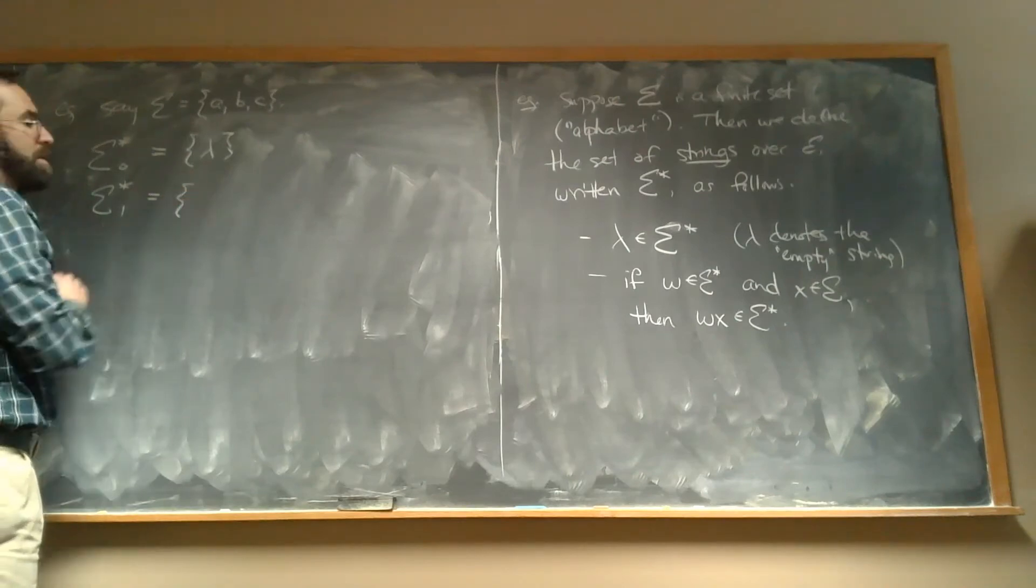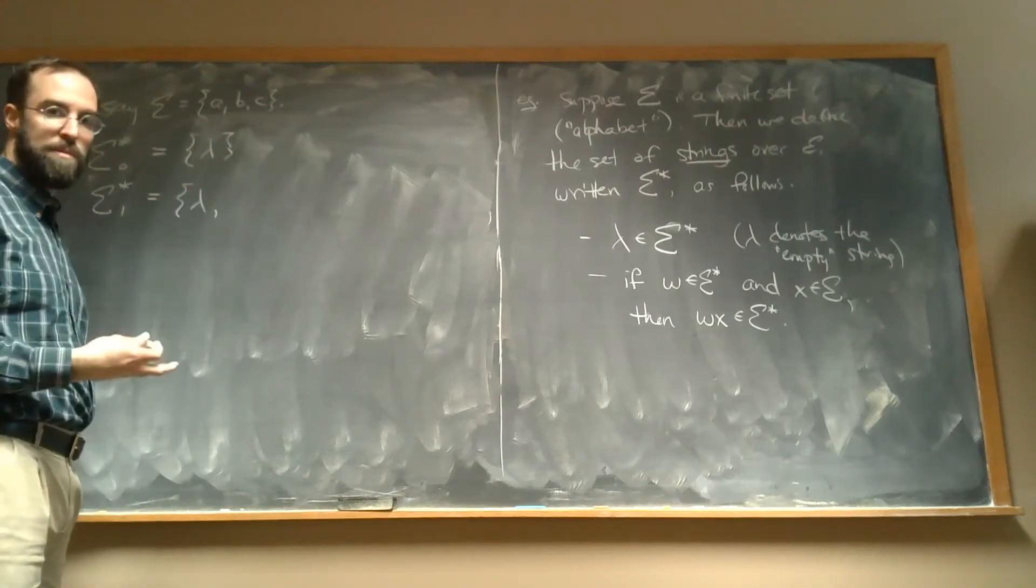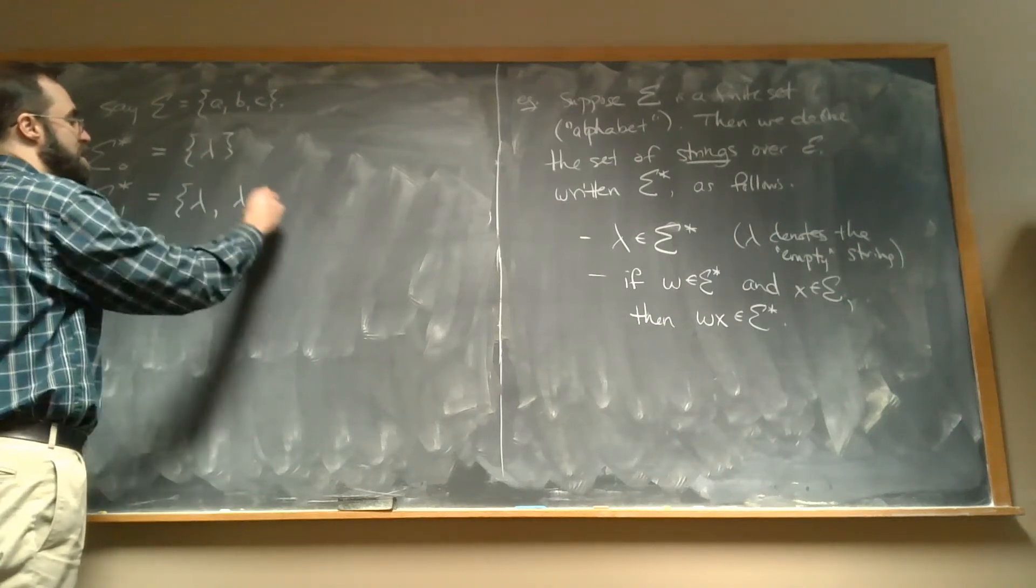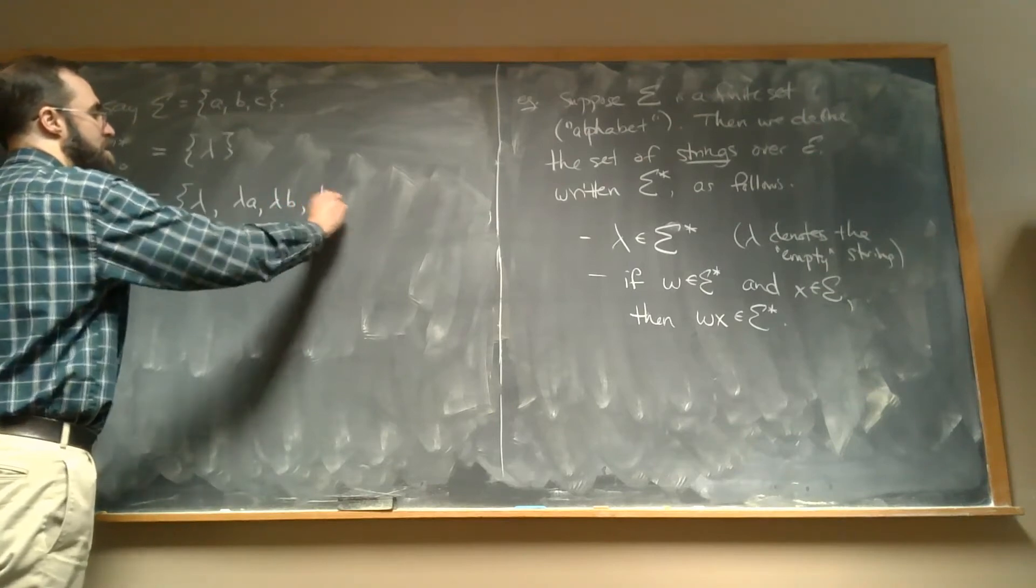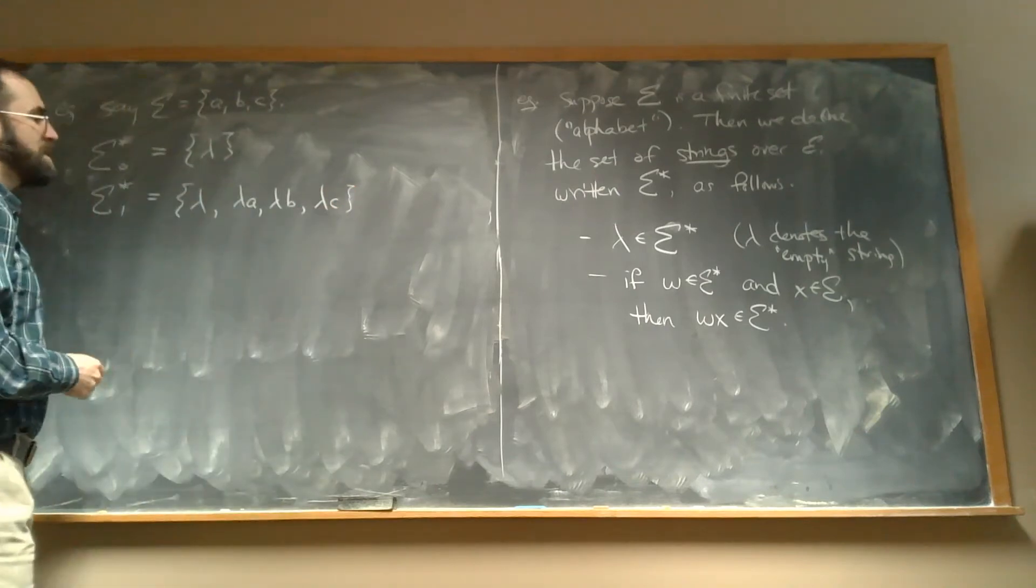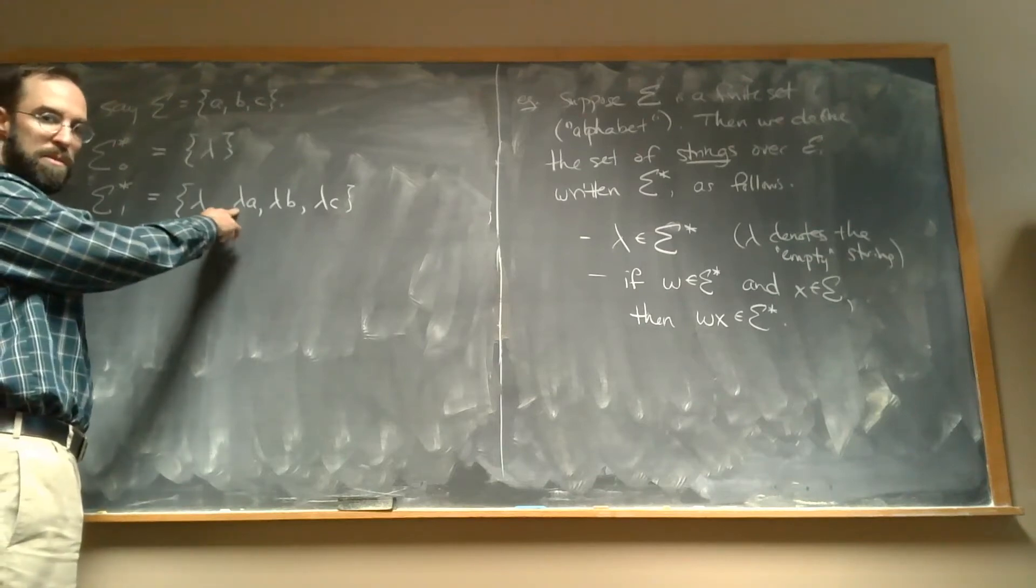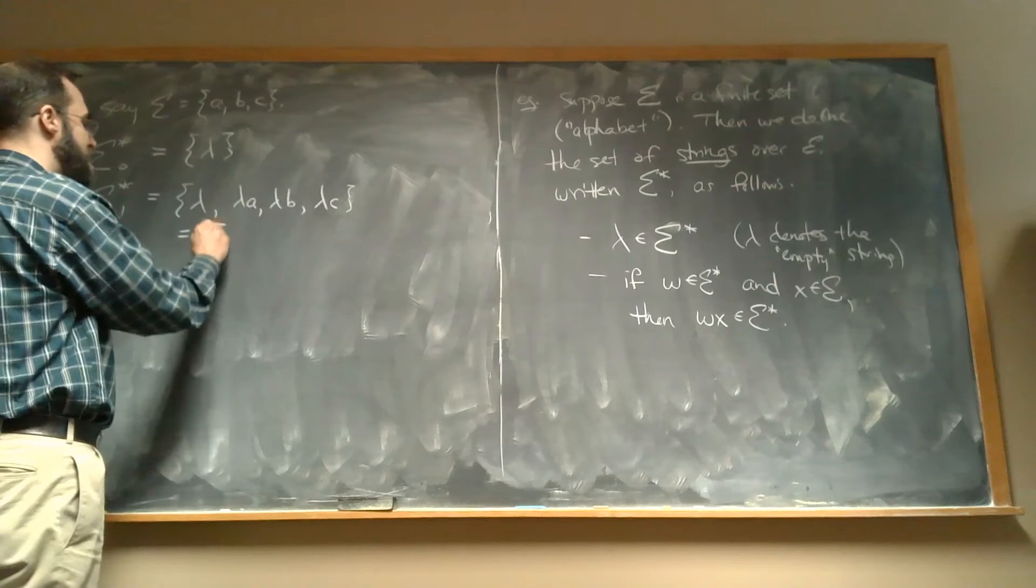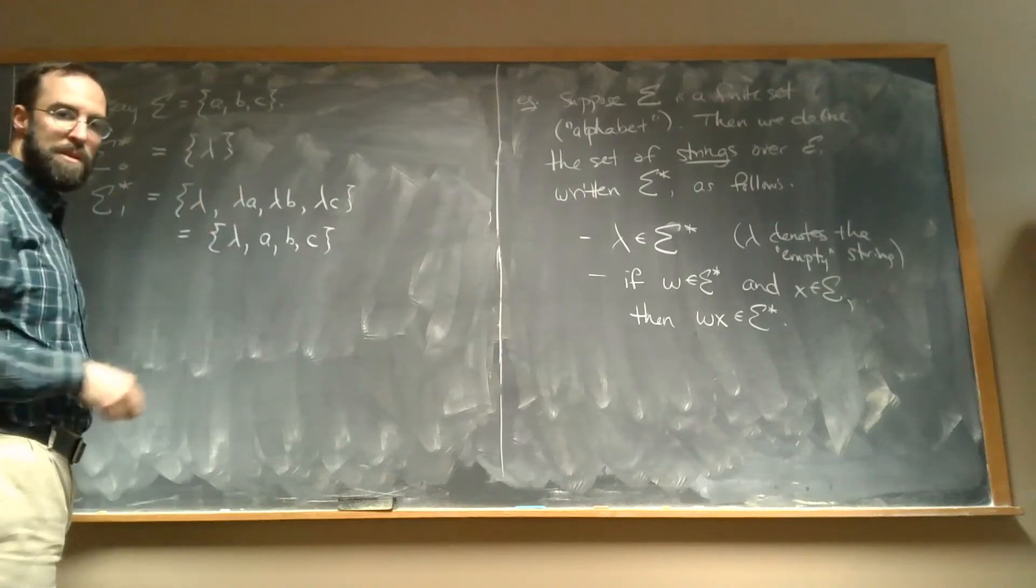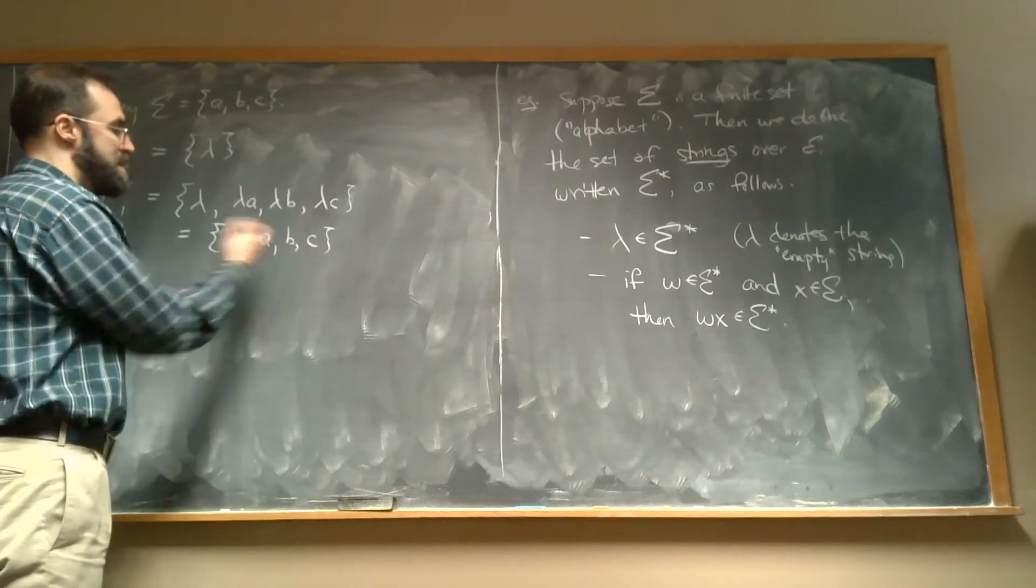So this is going to have lambda in here from before. We just copy it over. We're only ever going to add more stuff. But then I also have this followed by a, this followed by b, or this followed by c. So these are all in my set now too. And in this case, we want to think of lambda as being like the empty string. So I don't actually want to write them out like this. Let's not, when I've got lambda followed by some other stuff, let's not bother writing the lambda, because it's supposed to be empty. Technically it's there, but we'll just write it like this.